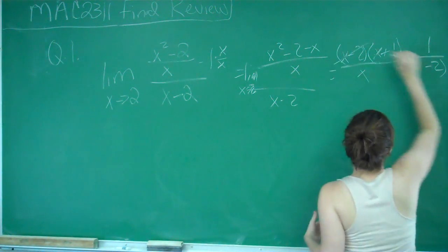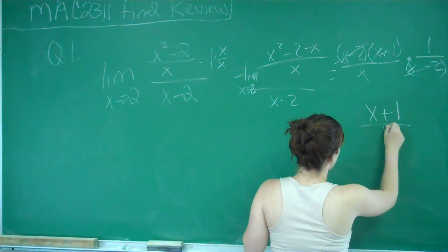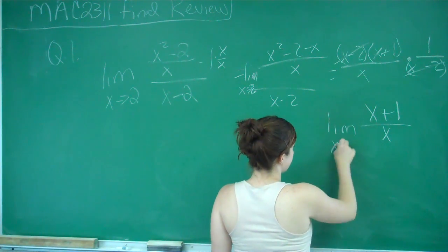So therefore, we can cancel out our x minus 2, and what we're left with is x plus 1 over x. And we're taking again the limit as x approaches 2.